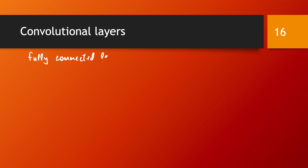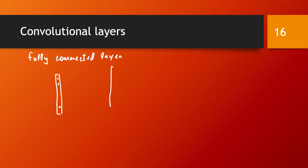In a fully connected layer, the idea was that we have our input presented as a vector, and each component of the vector comes in as the activation of a neuron in the previous layer. Then you have the current layer, and in this layer you have, as usual, a bias unit — I'm going to show this separately for a reason that becomes clear in a moment.